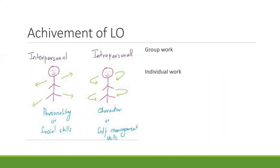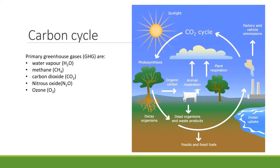To achieve the learning outcomes presented at the beginning of this presentation, we will allow students to develop interpersonal and intrapersonal skills through group work or individual assignments, finding information in scientific or professional papers. If one of the topics were the carbon cycle, students would discover that CO2 is one greenhouse gas but not the only one, since agriculture is a large source of multiple greenhouse gases.